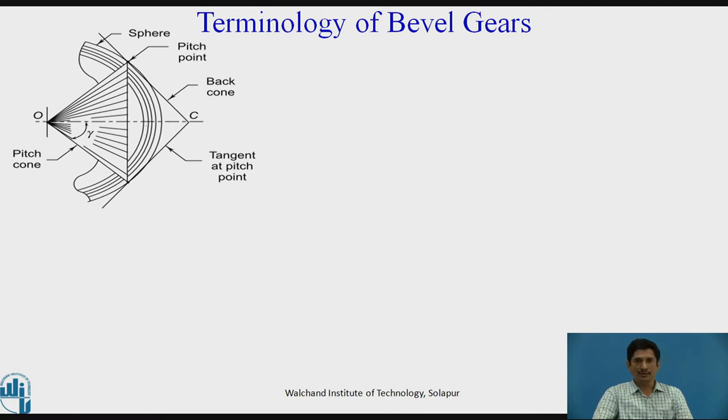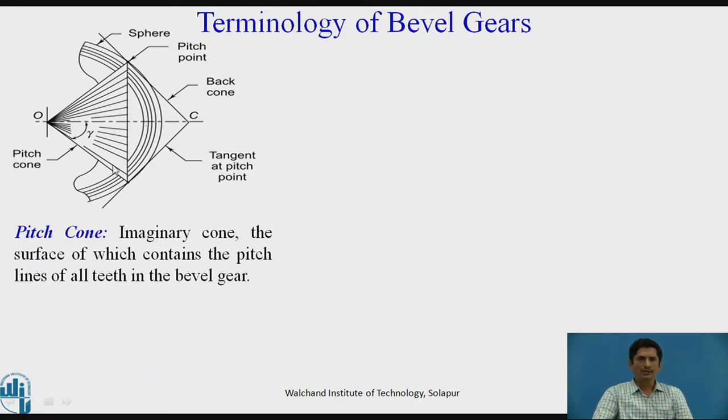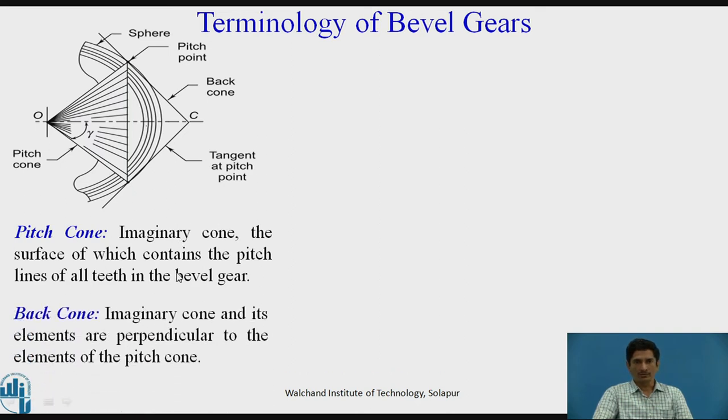Let us recall the terminology of bevel gears. In bevel gear, we have seen a pitch cone. Pitch cone is an imaginary cone, the surface of which contains all the pitch lines of the teeth in the bevel gear. It is represented by this cone. Then, the back cone. The back cone is an imaginary cone and its all elements are perpendicular to the elements of pitch cone. We can see that this triangle, red colored triangle, represents a back cone. Pitch cone is represented by this triangle and back cone is represented by this particular triangle.